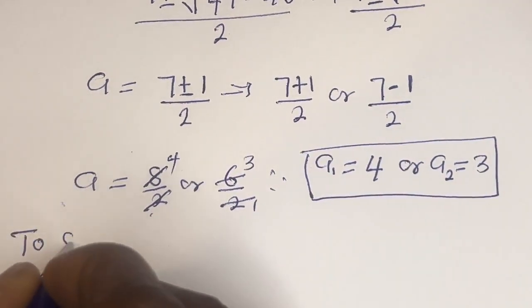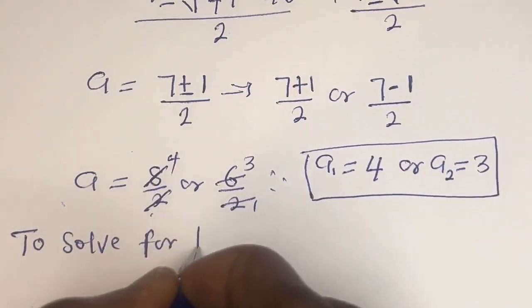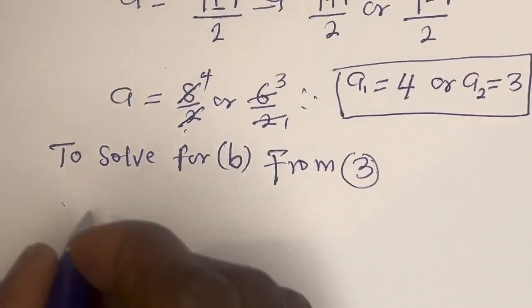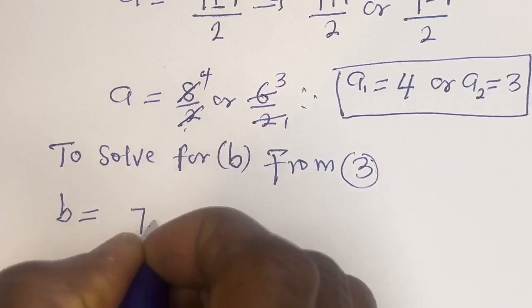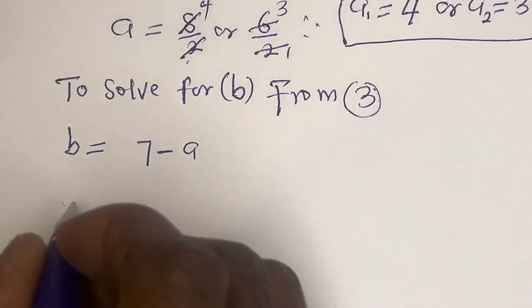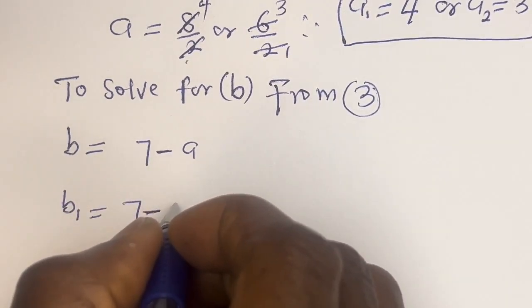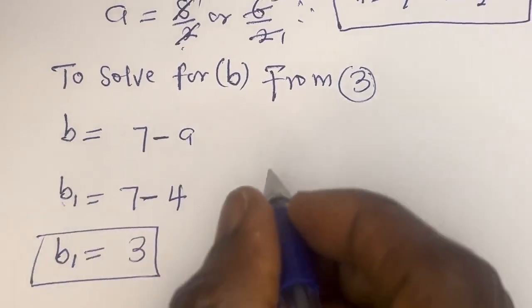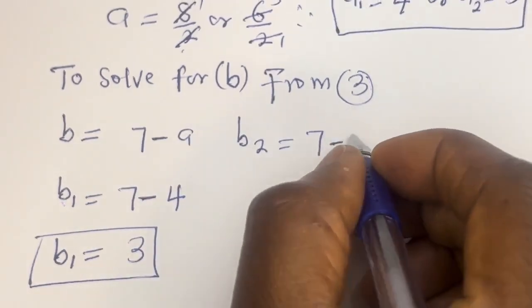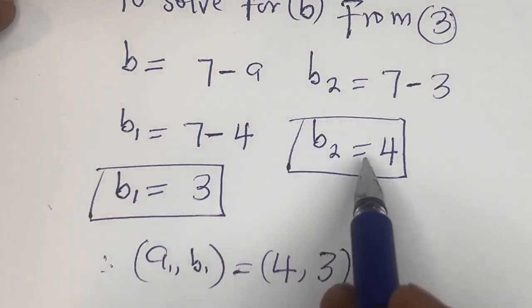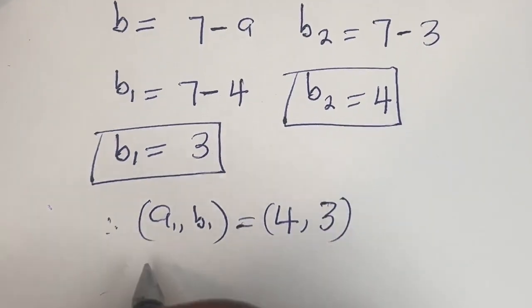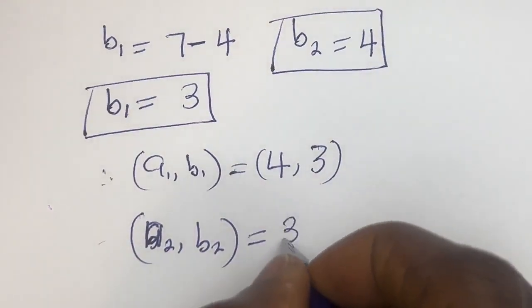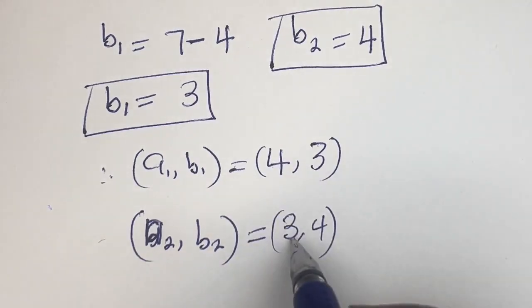We've gotten the values of a. Now let's solve for b. From equation 3, b is equal to 7 minus a. So b1 equals 7 minus a1, which is 7 minus 4, giving b1 equals 3. Also, b2 equals 7 minus a2, which is 7 minus 3, giving b2 equals 4. Therefore our final answers are: a1, b1 equals (4, 3) and a2, b2 equals (3, 4).